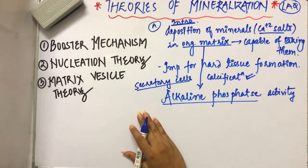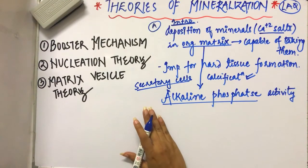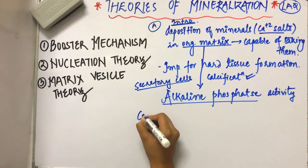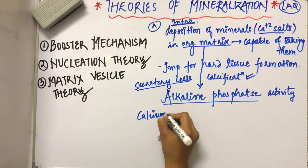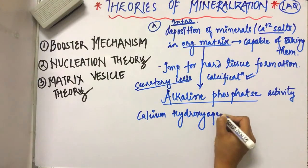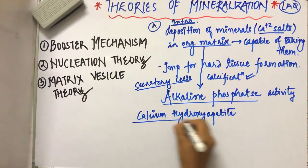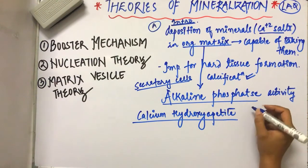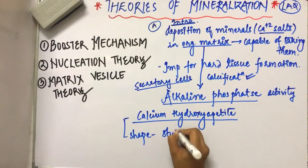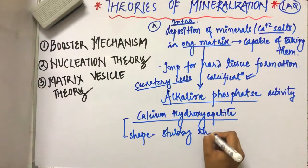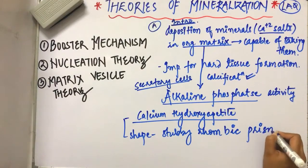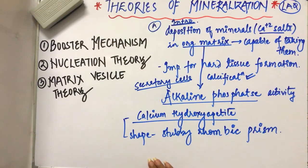Then the mineral component of all the hard tissues like enamel, dentin - what is the mineral component? Calcium hydroxy apatite. What is the shape? It is stubby rhombic prism shape, hexagonal in cross section. Hexagonal.